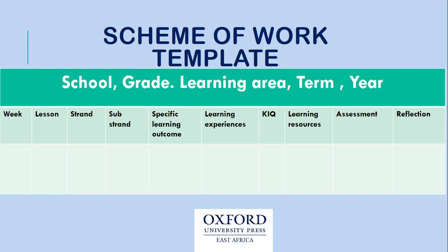For example, 'appreciate the importance of weather conditions within the locality' — as much as it's one of the learning outcomes, you cannot plan a lesson for appreciating. It is attitudinal. The learning outcomes are knowledge, skill, and attitudinal. The attitudinal shall be promoted throughout the course of the lessons within the other learning outcomes.